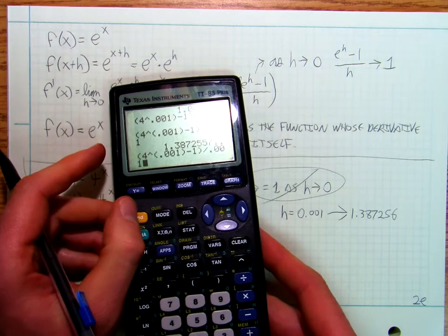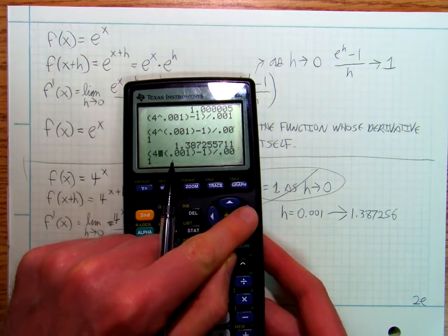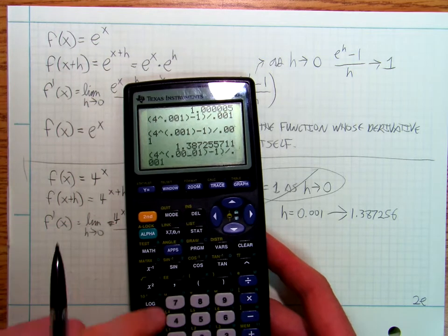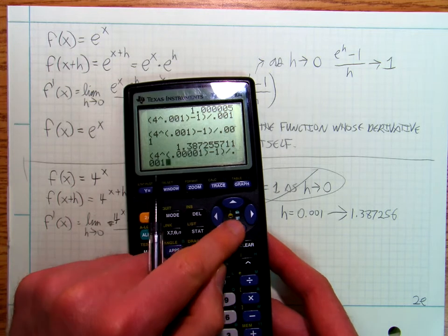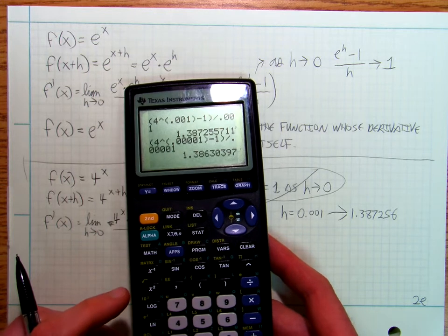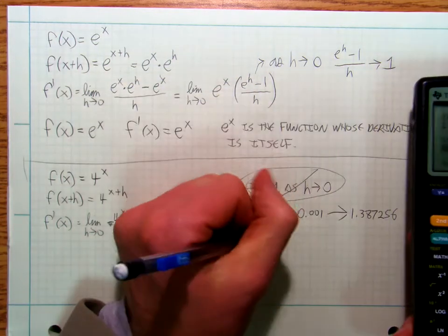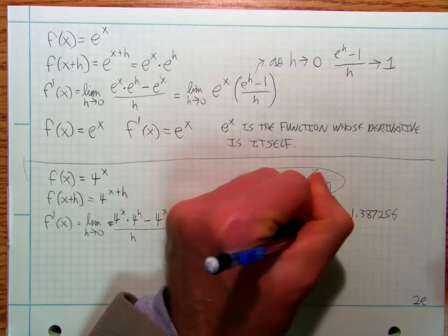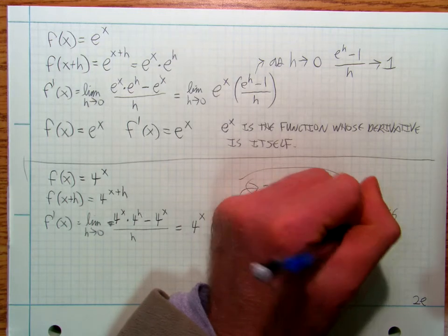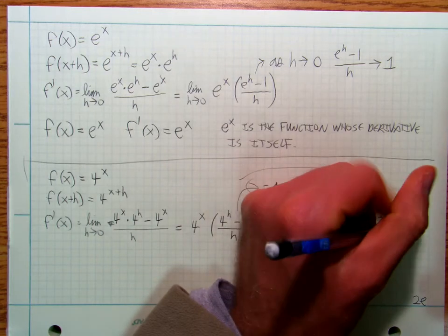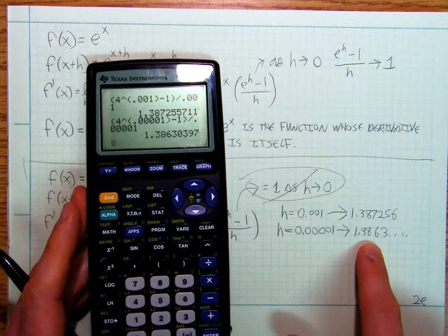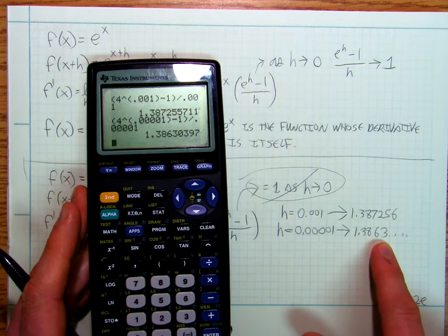Now, if I add a couple of zeros to that, and I add a couple of zeros to that, I get 1.3863, blah, blah, blah.